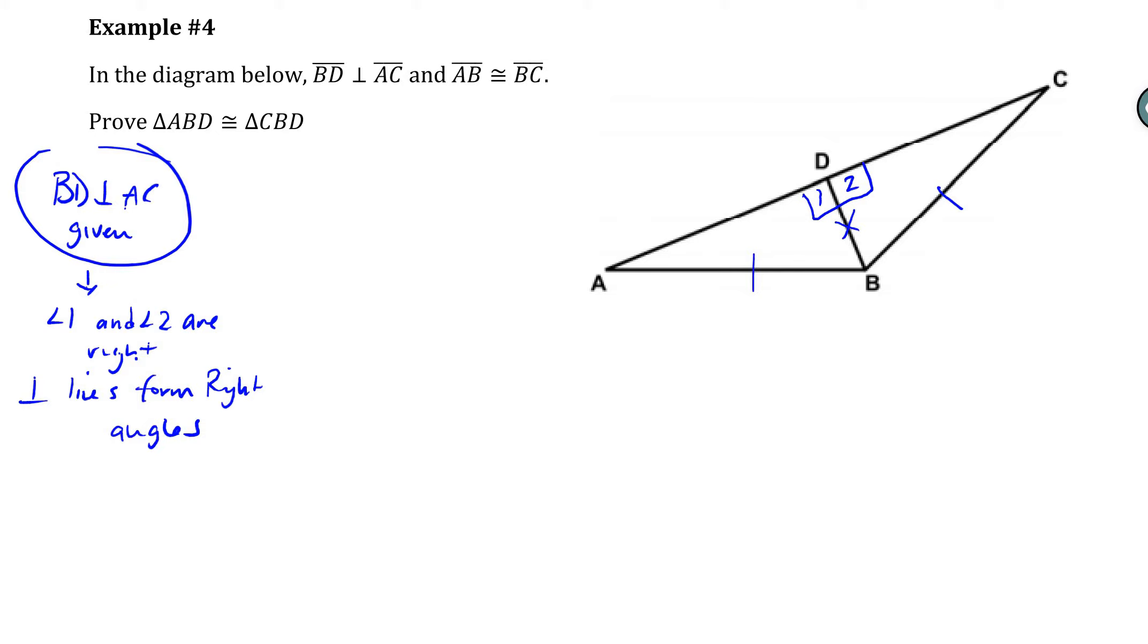So once we say that they're right angles, we then can say that they are congruent. So we could say angle 1 is congruent to angle 2 because all right angles are congruent.